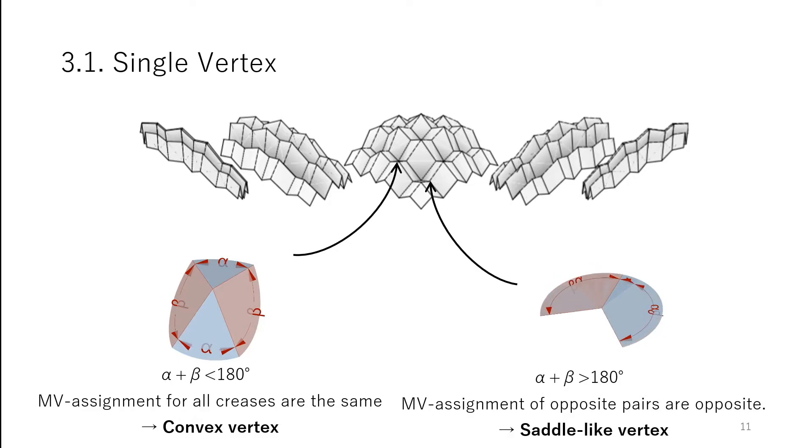When alpha plus beta is 180 degrees, it is developable vertices that can fold in both assignments, so either type can be applied.